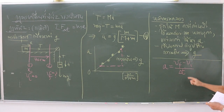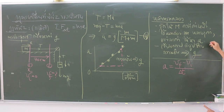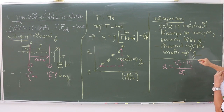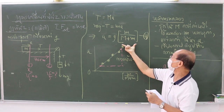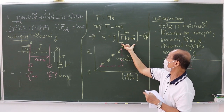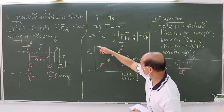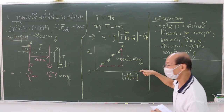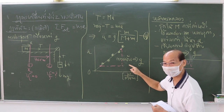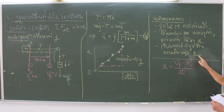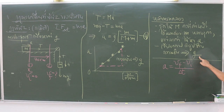Finally, when you obtain the data set of five values of mass ratios and five values of acceleration A, you then plot the graph and calculate the slope of the fitted straight line. The slope obtained is the value of the gravitational acceleration G that we want to determine.